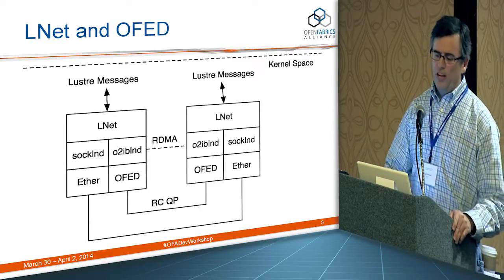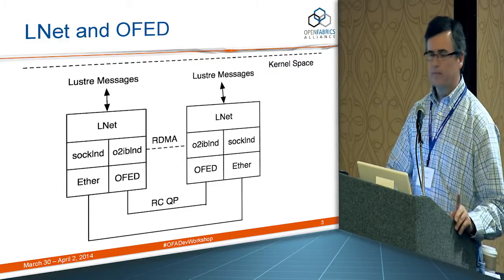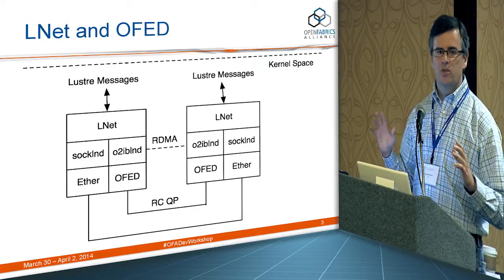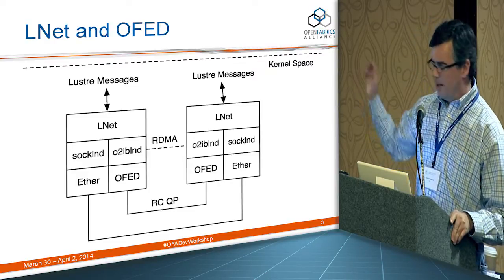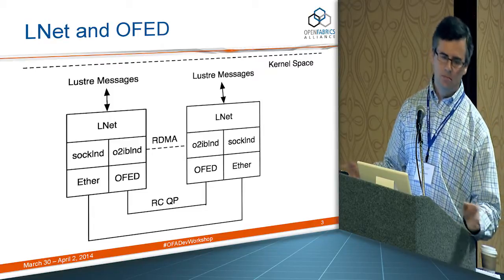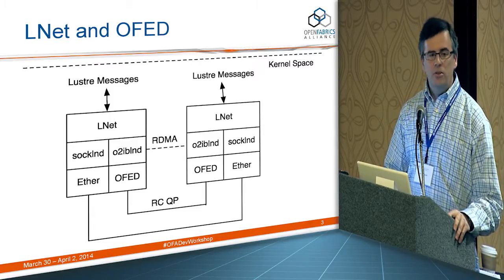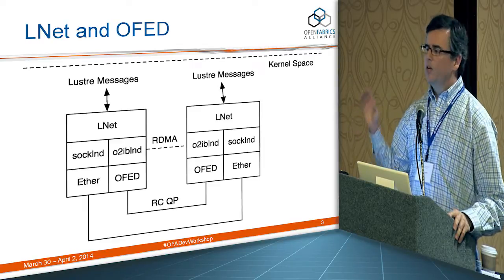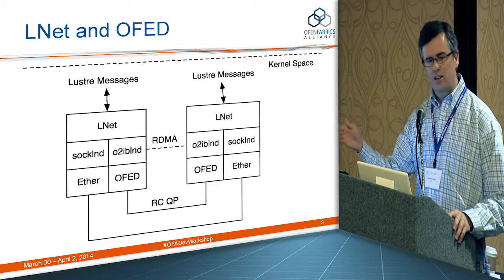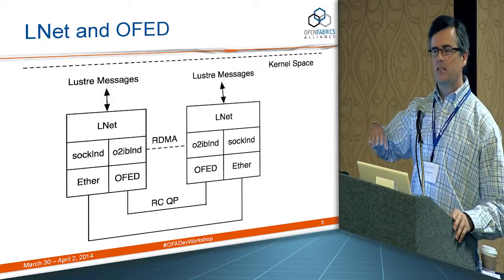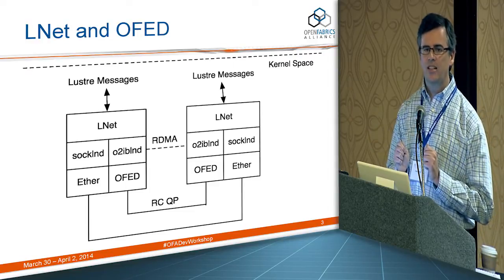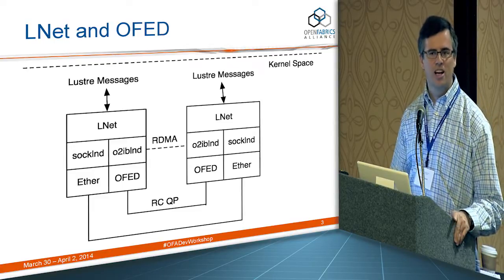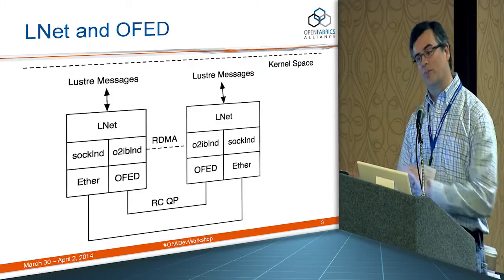When using OFED, we set up a reliable connection queue pair. We send small messages directly over that, and use RDMA for larger messages. LND also does its own flow control via two tunable parameters: credits — the maximum number of outstanding messages allowed on a given network at any moment — and peer credits — the maximum number of messages to a given peer at any moment. When PortalRPC passes requests down to LND, LND must acquire credits before sending, or else it queues the message. We self-impose our own flow control and don't expect it from the network, although we'd use it if provided.